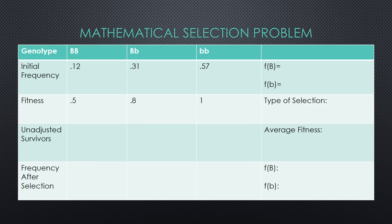Now that we have seen a real-life example of how natural selection can alter allelic and genotypic frequencies in a population, let's go over a common mathematical problem you may see in a genetics class. The goal of these problems is to calculate the frequency of survivors after selection. You will usually be given the initial genotypic frequencies and each genotype's fitness value. In this table we will be using our directional selection rabbit example, where white rabbits with genotype little b little b have the largest fitness.